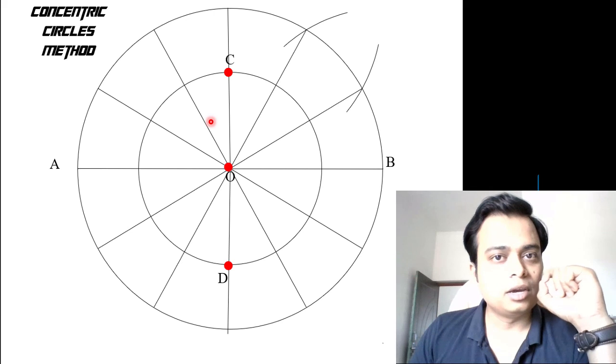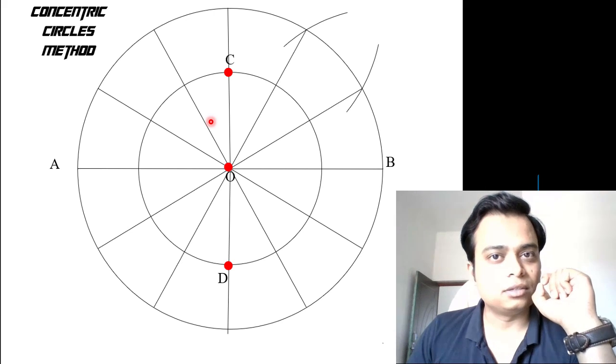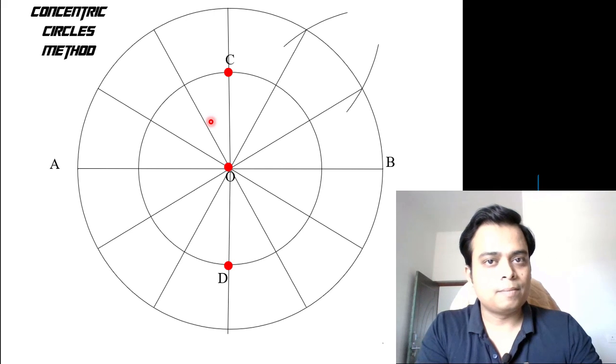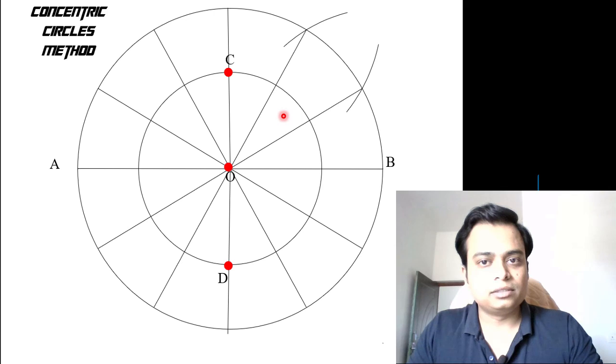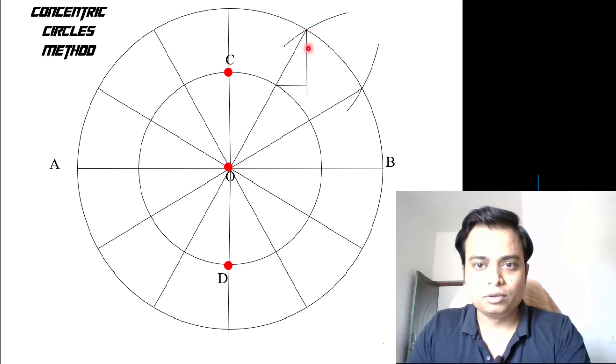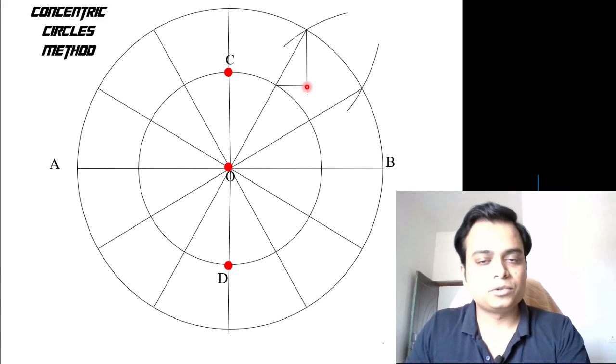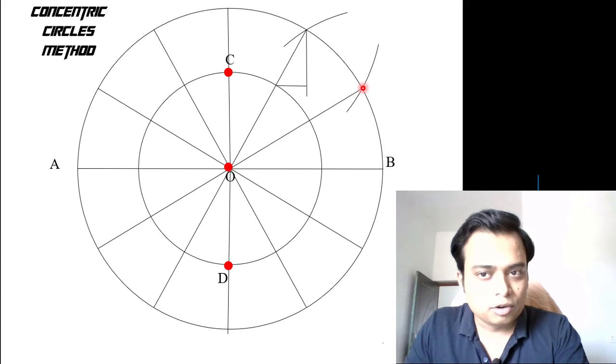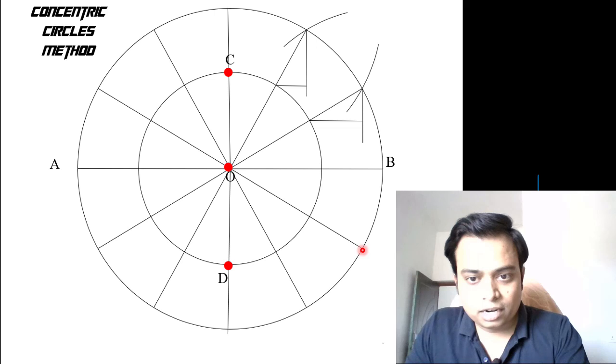Drill this into your mind: vertical lines from the outer circle and horizontal lines from the inner circle. Let me show you - vertical lines from the outer circle and horizontal lines from the inner circle, and this intersection point is a point on the ellipse itself. Let's do the same drill: vertical and horizontal.